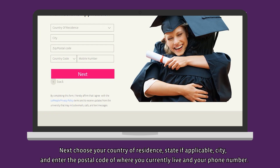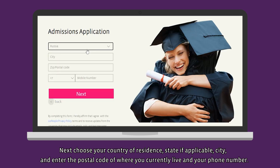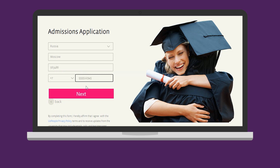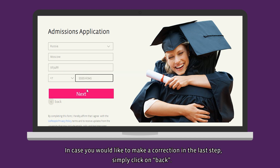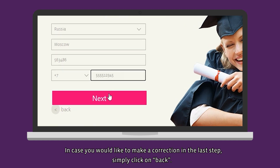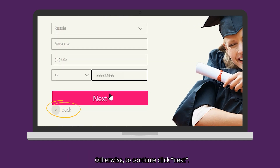Next, choose your country of residence, state if applicable, city, and enter the postal code of where you currently live and your phone number. In case you would like to make a correction in the last step, simply click on Back. Otherwise, to continue, click Next.